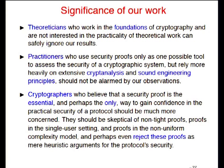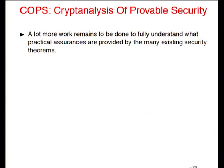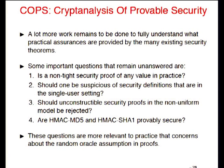However, if you're a cryptographer who believes a security proof is essential and perhaps the only way to gain confidence in the practical security of a protocol, then you should be much more concerned. You should be very skeptical of non-tight proofs, proofs in the single-user setting, and proofs in the non-uniform complexity model, and perhaps even totally reject these as mere heuristic arguments. There is a lot of interesting, useful, relevant work to be done in understanding what security proofs really give you in practice. Key open questions: Is a non-tight proof of any value in practice? Should one be suspicious of single-user-setting definitions? Should unconstructible proofs in the non-uniform model be rejected? Are HMAC-MD5 and HMAC-SHA1 provably secure in any reasonable sense? These questions are more relevant to practice than concerns about the random oracle assumption.